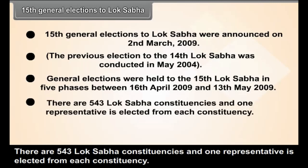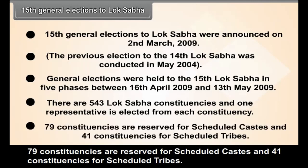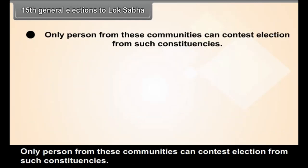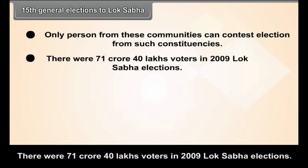There are 543 Lok Sabha constituencies and one representative is elected from each constituency. 79 constituencies are reserved for scheduled castes and 41 constituencies for scheduled tribes. Only a person from these communities can contest election from such constituencies. There were 71 crore 40 lakh voters in the 2009 Lok Sabha elections.